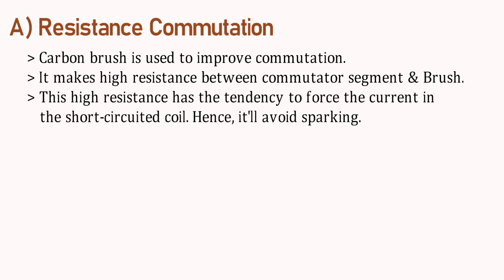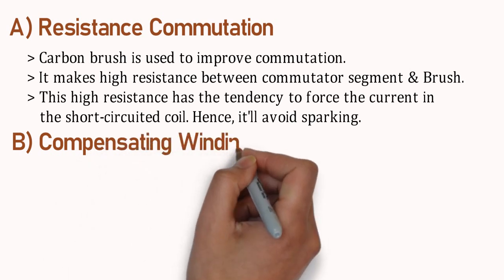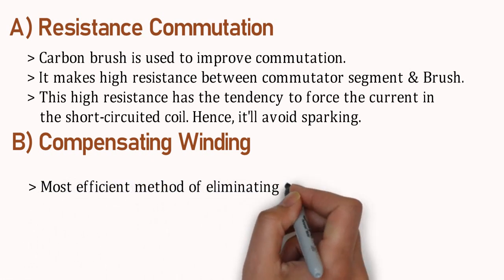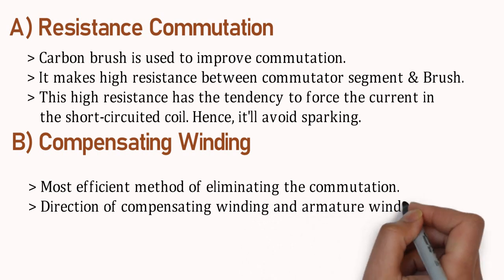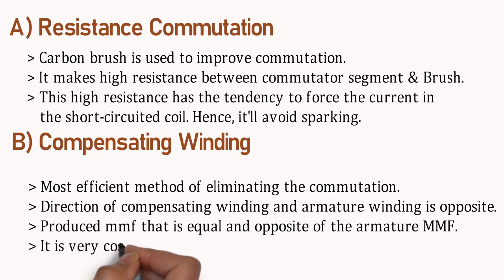Second is use of compensating winding. This is the most efficient method of eliminating commutation. Direction of compensating winding and armature winding is opposite. Produced MMF that is equal and opposite to the armature MMF. The major drawback with the compensating winding is that they are very costly.